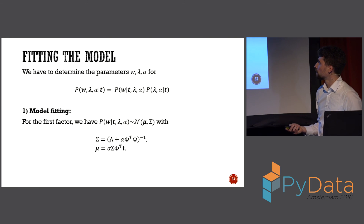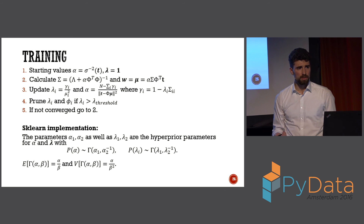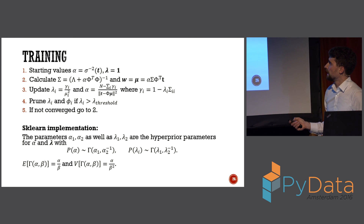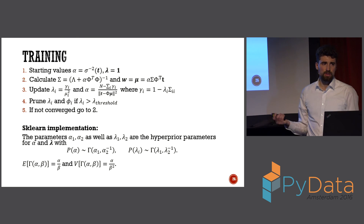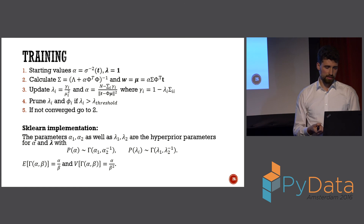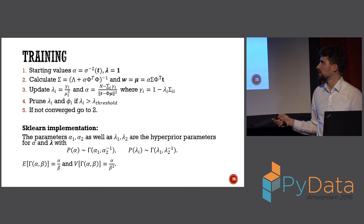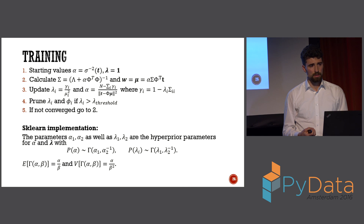Second question: how well does it scale? Looking at the algorithm, this part is basically ordinary least squares, and the updates are extremely easy. It then depends on how fast it converges. I found no convergence theorem specifying how it depends on the number of features, but it takes more time to converge with more features.